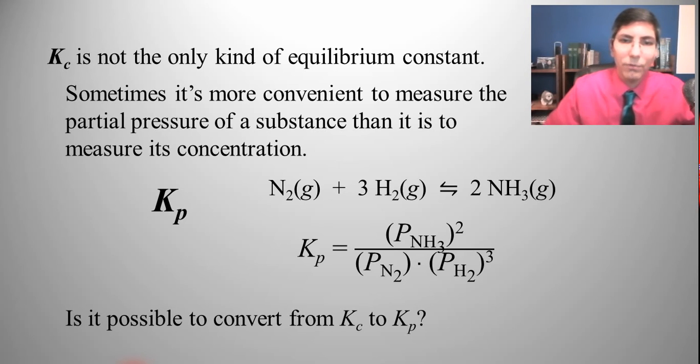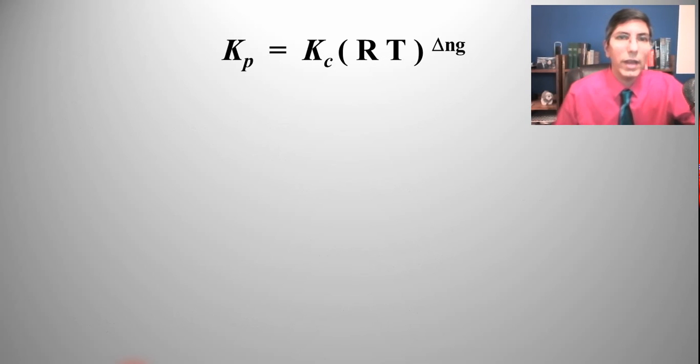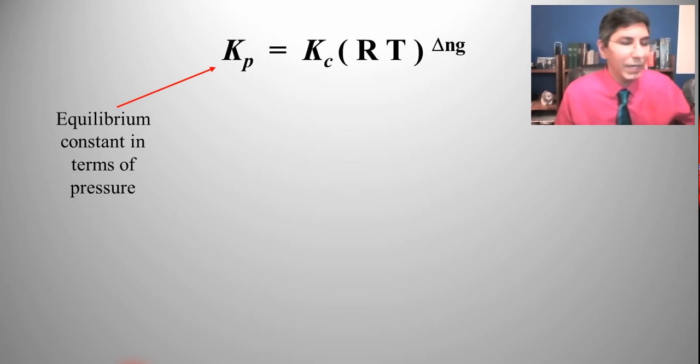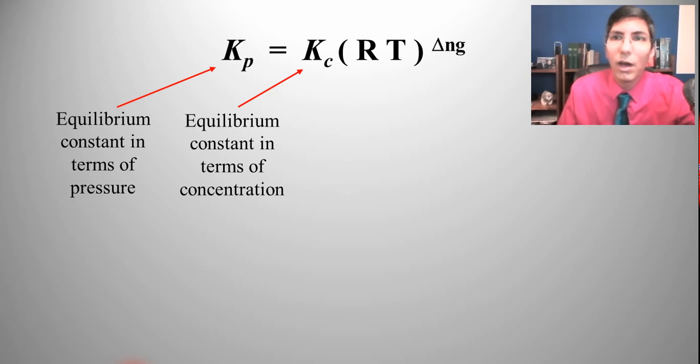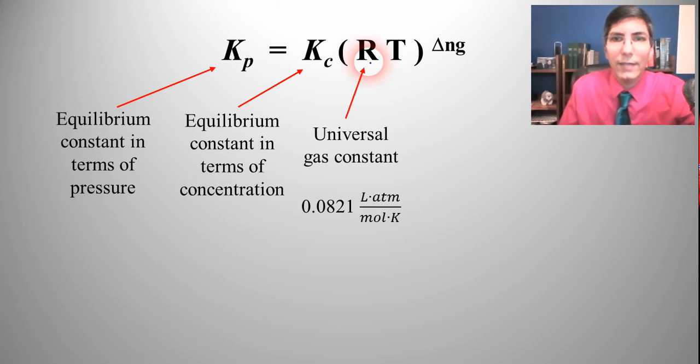Now is it possible to convert from Kc to Kp? Well if I'm asking the question it must be possible right? So it's a definite yes. Here's the equation that we're going to use for that. Now Kp as we said is our equilibrium constant in terms of pressure. Kc is in terms of concentration. R is the universal gas constant and if you remember this from gas laws in first-year chemistry which we'll eventually get to in this course as well, it's equal to 0.0821 liter atmospheres per mole Kelvin.